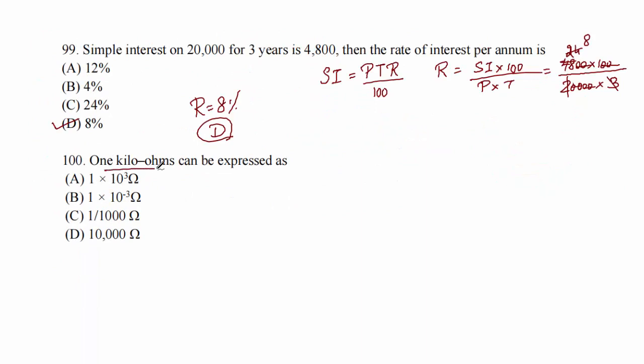Question 100: one kilo-ohm can be expressed as? In diploma and engineering exams, these questions are easy with zero chances of making mistakes. One kilo-ohm is 10³ ohms, which is 1 × 10³ Ω. Option A.